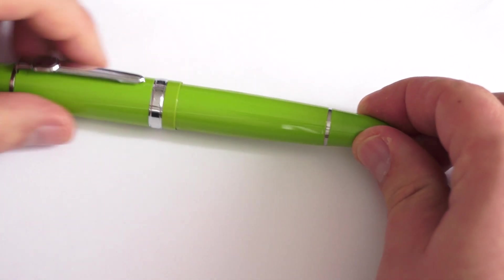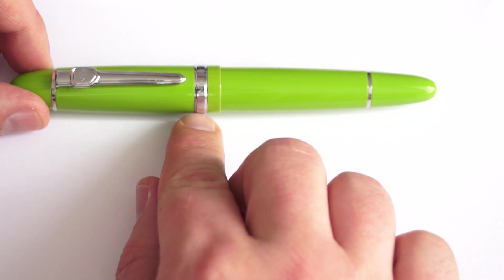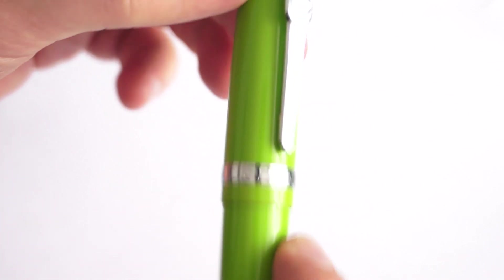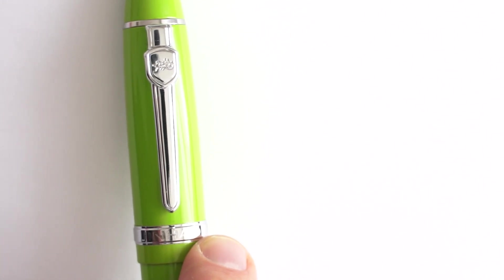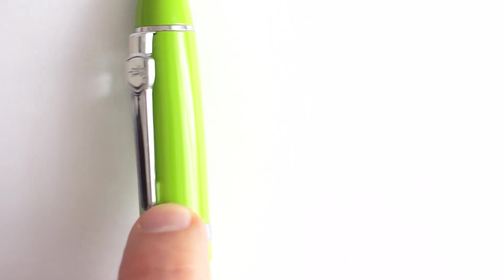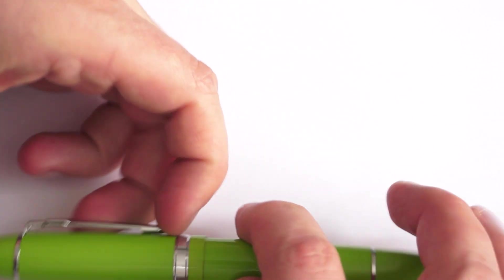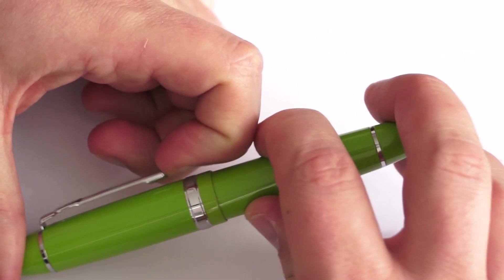Here on the cap you have another chromium ring which will have the Jinhao written, Jinhao and then the model number 159. On the cap we have the Jinhao logo on the clip, which is a carriage pulled by a horse. Also the clip design is unique to Jinhao. This doesn't resemble Mont Blanc in any ways.